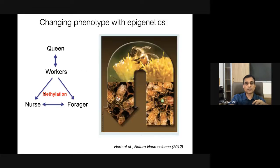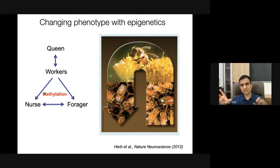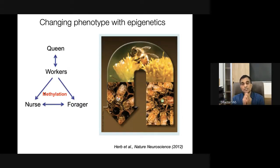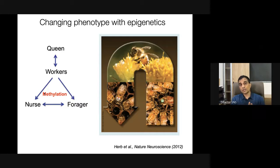Even more dramatic is the case of army ants. The difference between the queen ant and workers is humongous — at least ten times the size; you cannot miss it. Yet at the genetic level they are 100% identical. It is just the covalent modifications imposed either onto the DNA or onto proteins like histones that can bring about such huge changes. With that, I'm now going to switch gears to discuss diseases and how much of this information can be transmitted from one generation to the next.